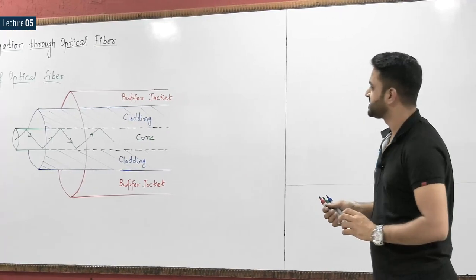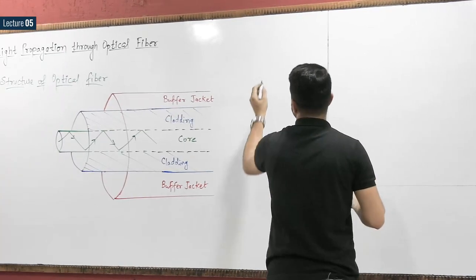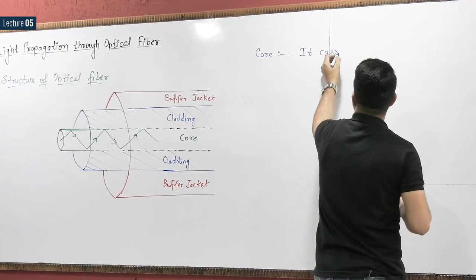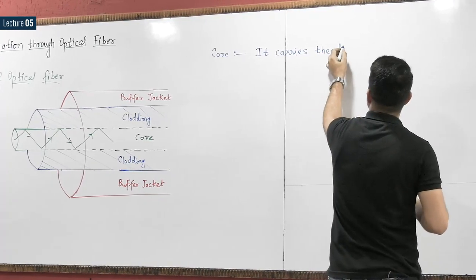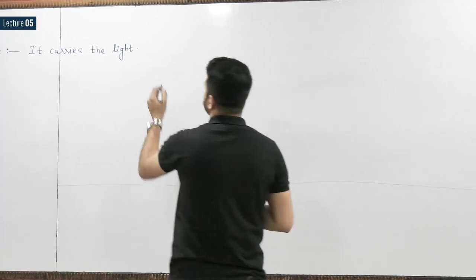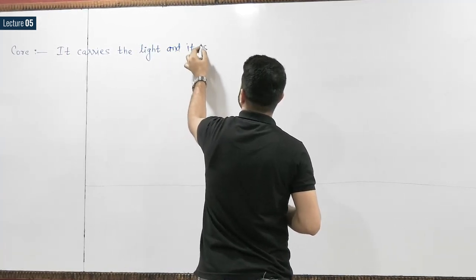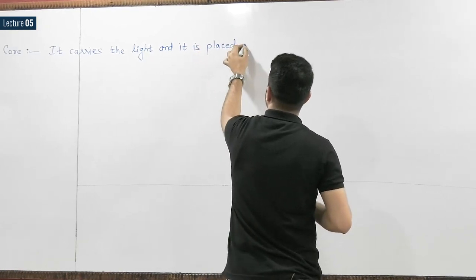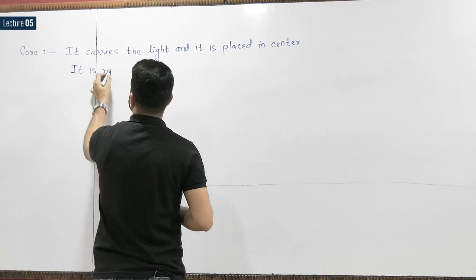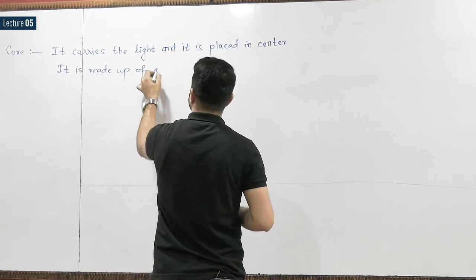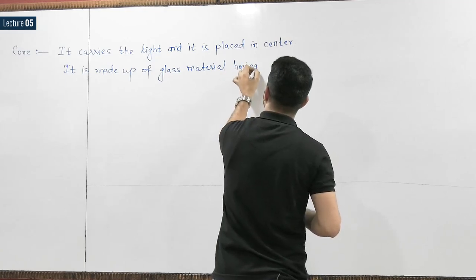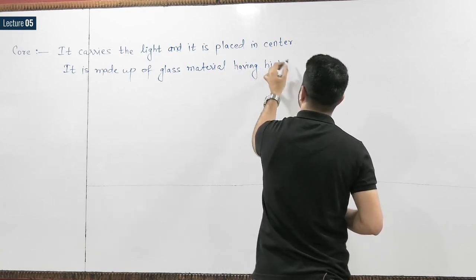The three different parts are core, cladding, and buffer jacket. The core carries the light and is placed at the center. It is made up of glass material having a high refractive index.